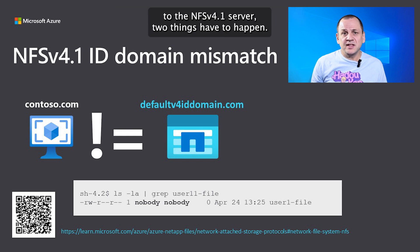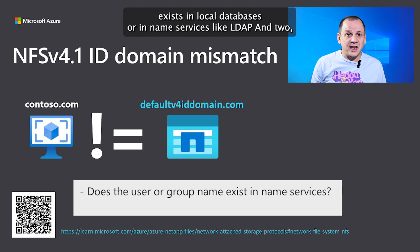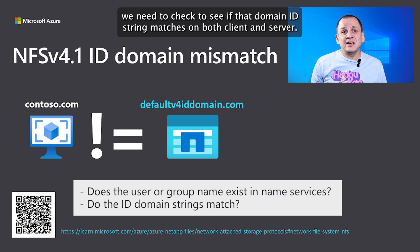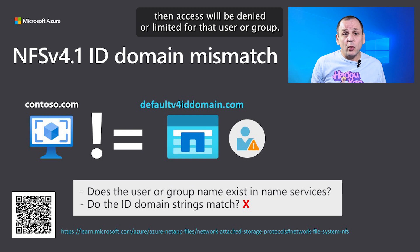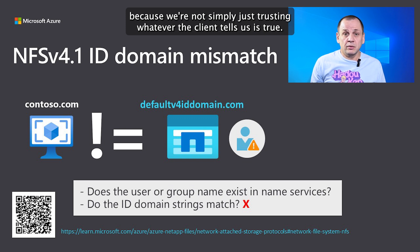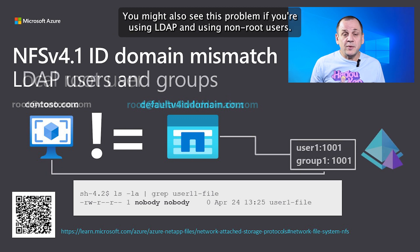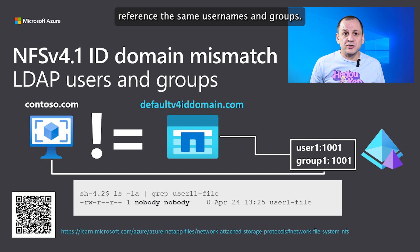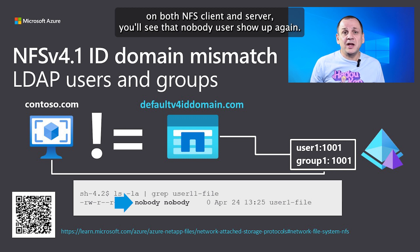When an NFSv4.1 client sends a name string to the server, two things must happen: the NFS server checks if that user or group name exists in local databases or name services like LDAP, and it verifies that the domain ID string matches on both client and server. If either check fails, access is denied or limited. This is a vast improvement over NFSv3 security because we're not simply trusting whatever the client tells us. In Azure NetApp Files, you might see the nobody issue with the root user or with LDAP users when domain IDs don't match, since both client and server reference the same usernames and groups.